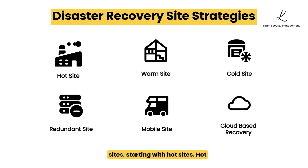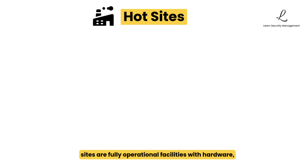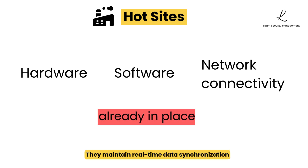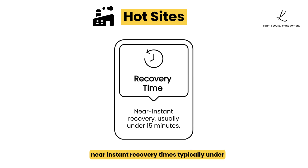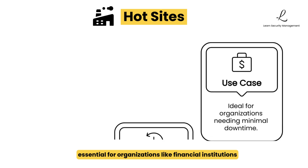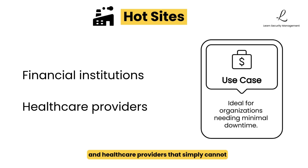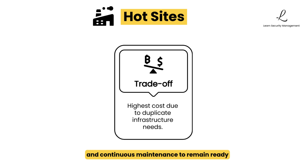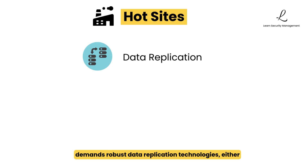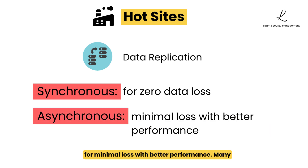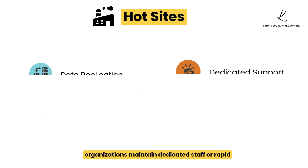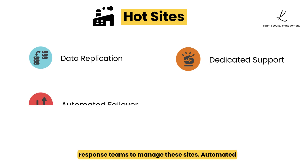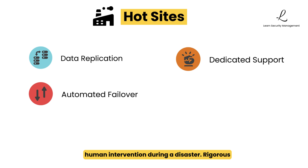Let's understand types of recovery sites, starting with hot sites. Hot sites are fully operational facilities with hardware, software, and network connectivity already in place. They maintain real-time data synchronization with the primary site and provide near-instant recovery times, typically under 15 minutes with modern solutions. They are essential for organizations like financial institutions and healthcare providers that cannot tolerate extended downtime. These sites come with the highest cost as they require complete duplication of infrastructure and continuous maintenance. Implementing a hot site demands robust data replication technologies — either synchronous for zero data loss or asynchronous for minimal loss with better performance. Many organizations maintain dedicated staff or rapid response teams, and automated failover mechanisms are often employed to minimize human intervention during a disaster.